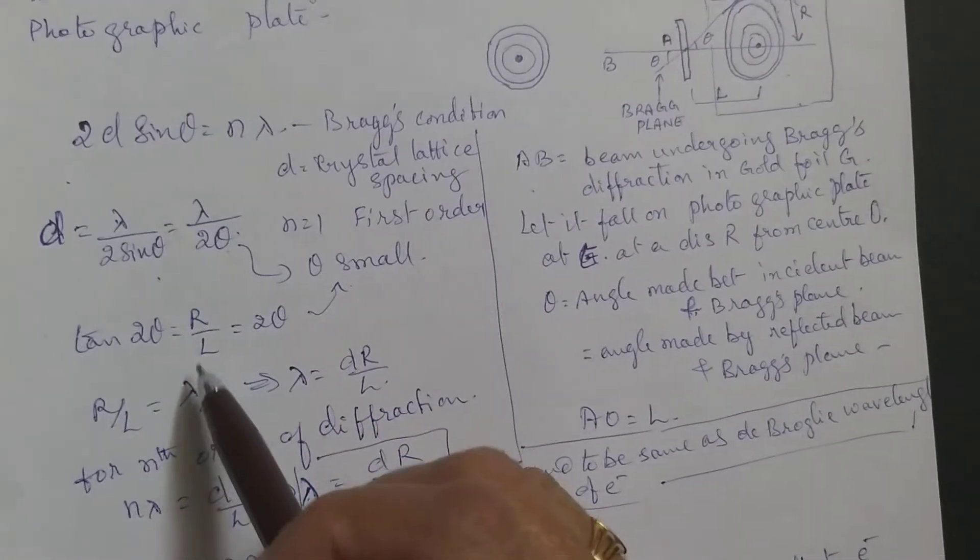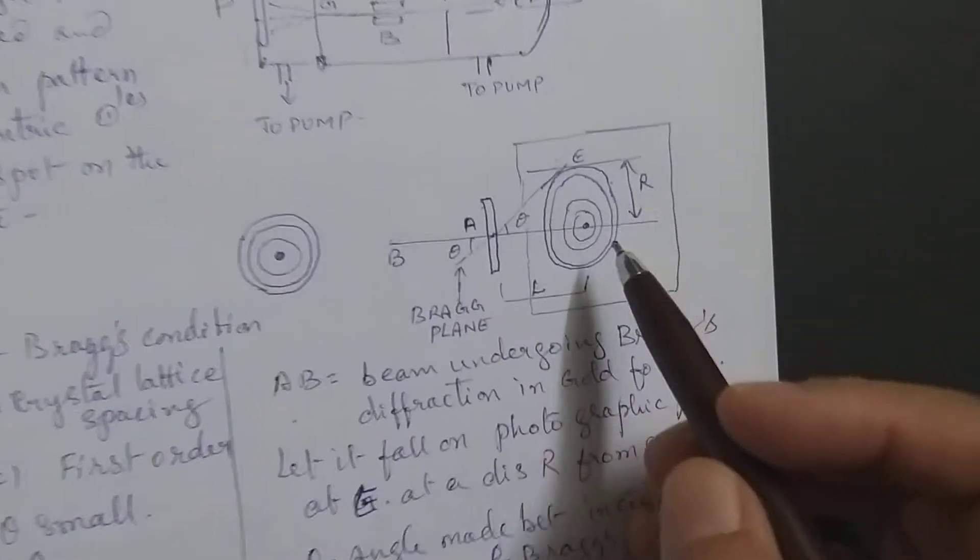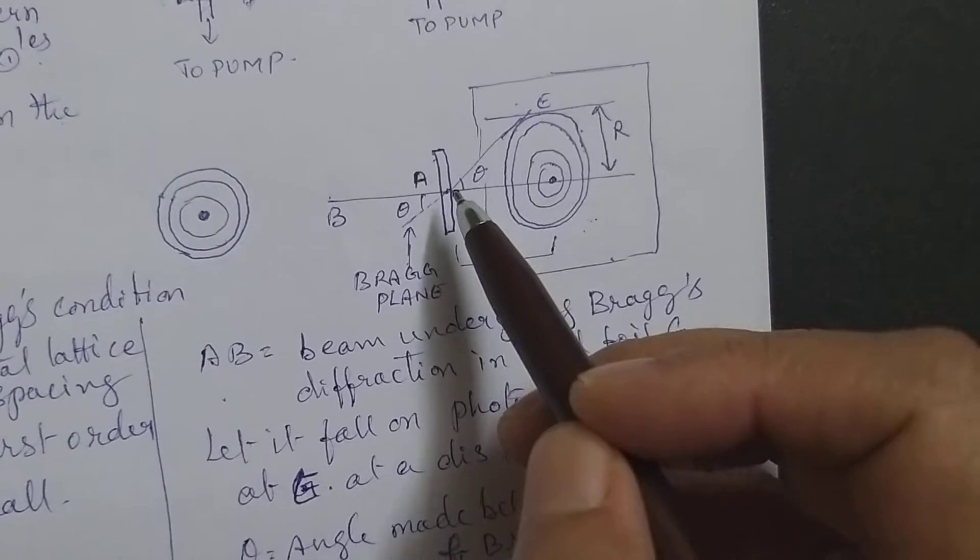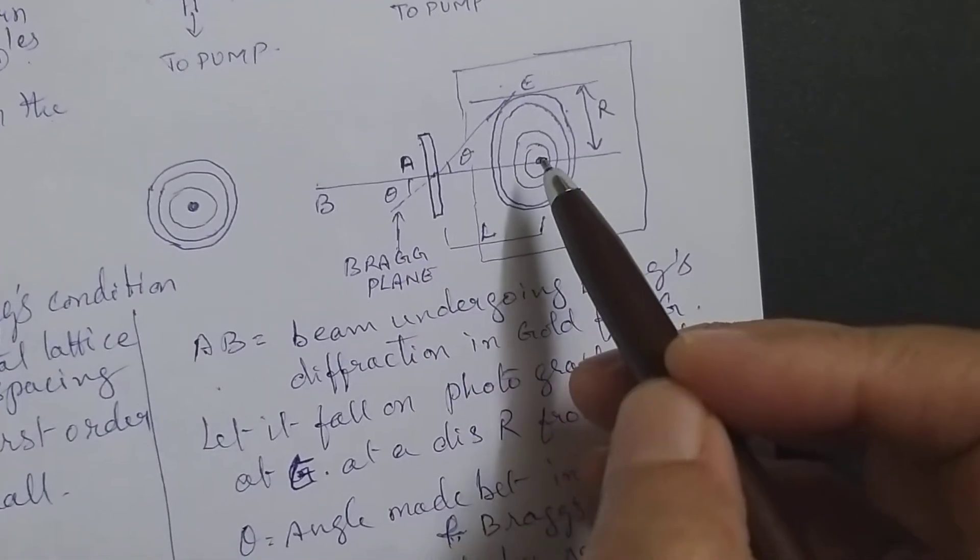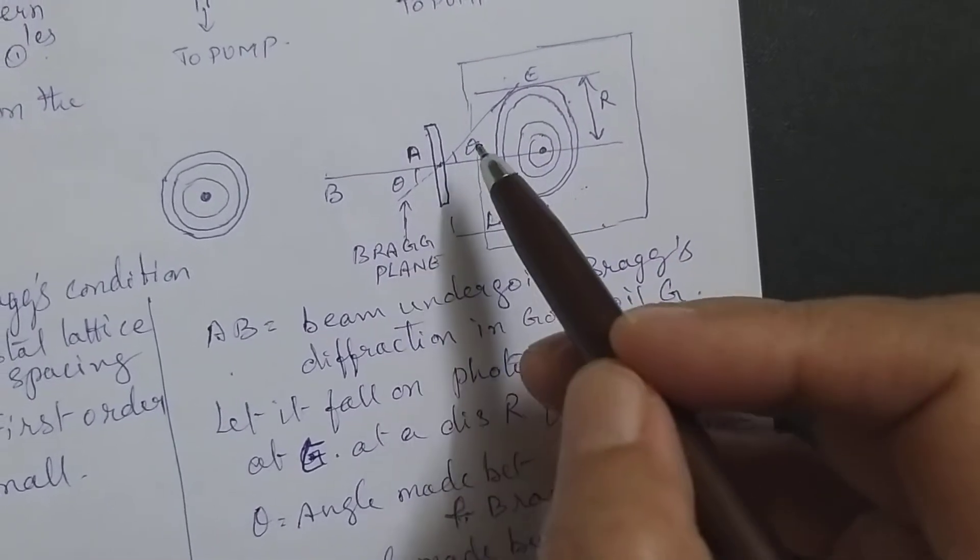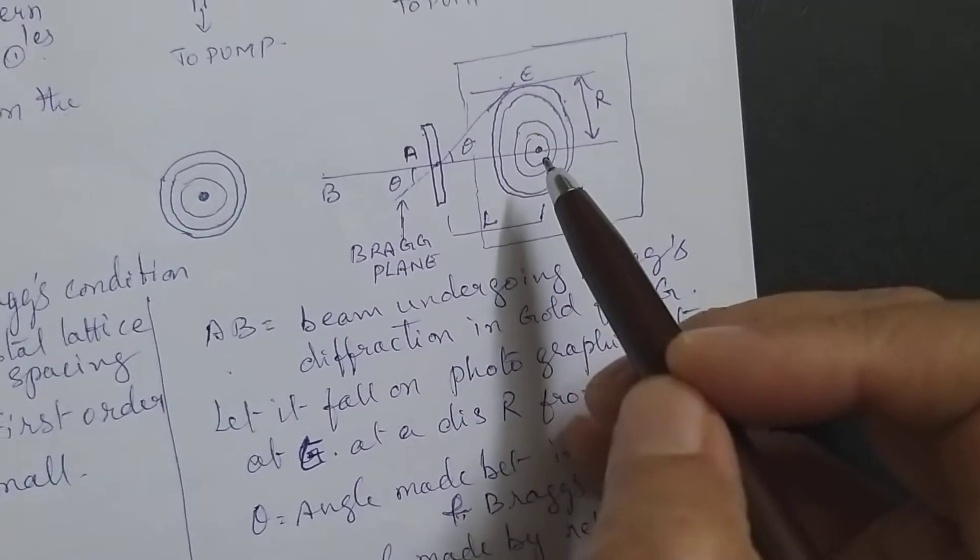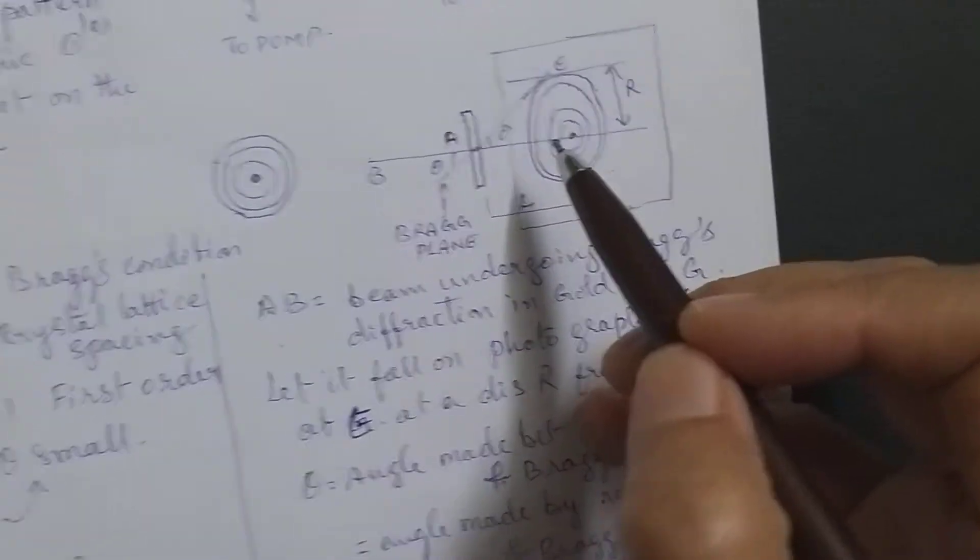Theta equals r by l from this triangle. This triangle has a base, perpendicular, and hypotenuse. Tan theta equals perpendicular by base, which is r by l.